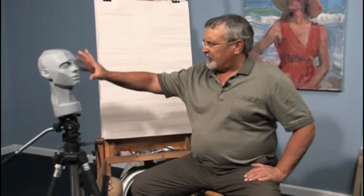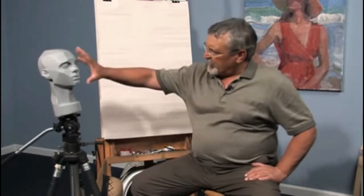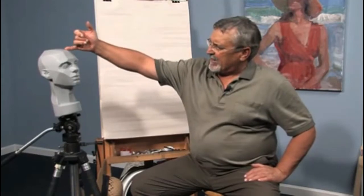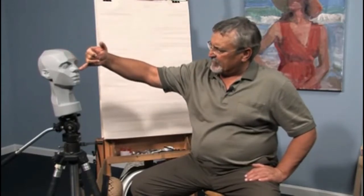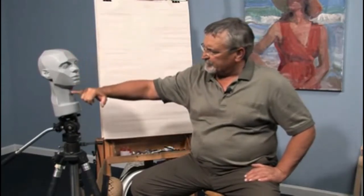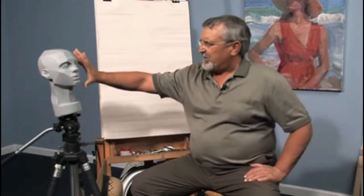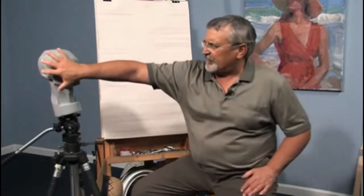Still, this area remains basically in the shadow. The basic line of the shadow comes down like this, travels down the nose, under the nose, and down the throat. This side is basically in the shadow, and this side is in the light.